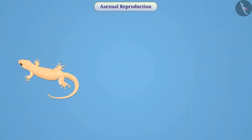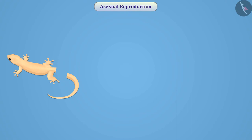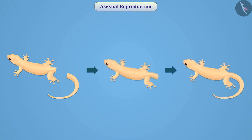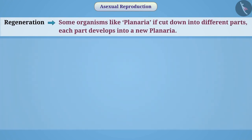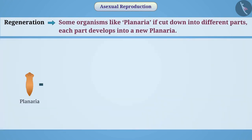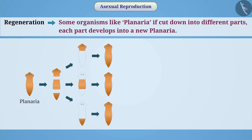Regeneration: You must have seen that lizards separate their tail from their body under adverse circumstances, and later the lizard regenerates its tail again. Similarly, in the method of regeneration, if some organisms like Planaria are cut into different parts, each part develops into a new Planaria. This method of reproduction can also be seen in Hydra.